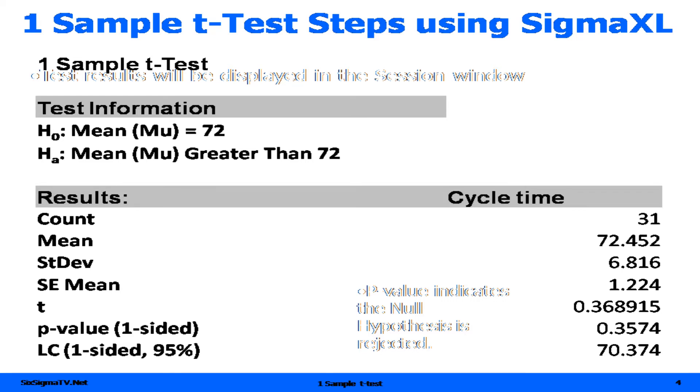You can see here, our test information is shown the null and alternate hypothesis. Our results, we have 31 data points, with a mean of 72.452. And most importantly, as we look down at the bottom, the p-value is 0.3574.